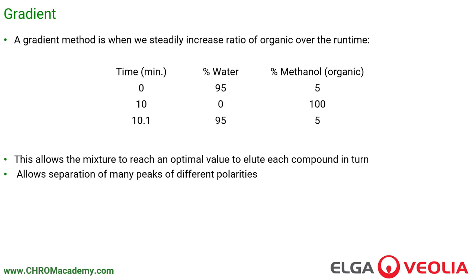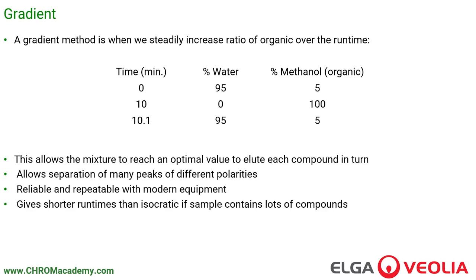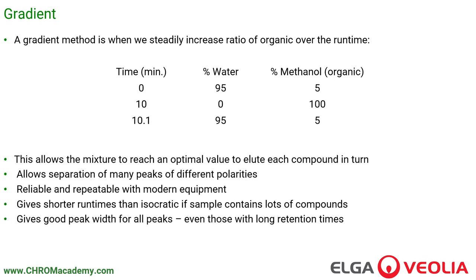Gradient analysis allows the separation of many peaks of different polarities. It's reliable and repeatable with modern equipment, gives shorter run times than isocratic — particularly if the sample contains lots of compounds — and gives good peak width for all peaks, even those with very long retention times.